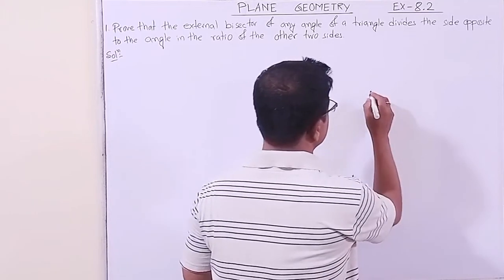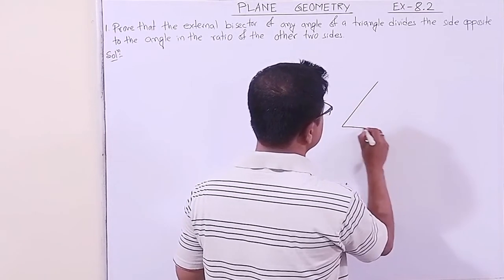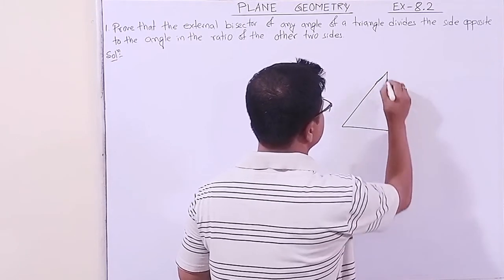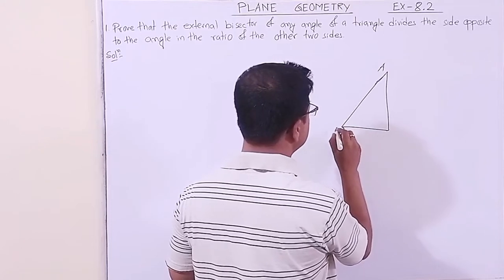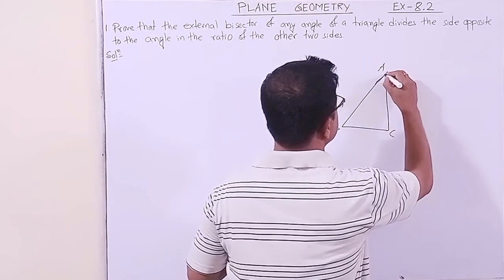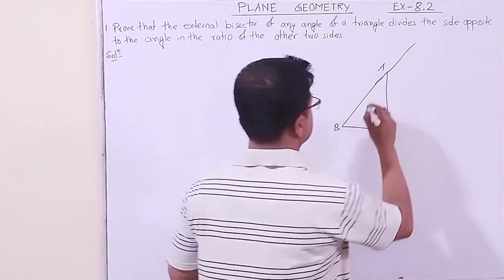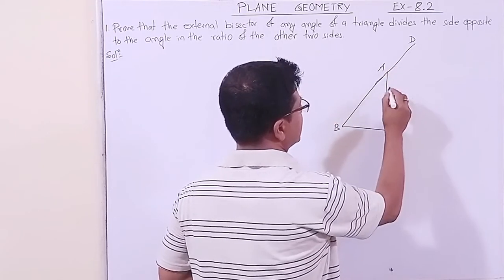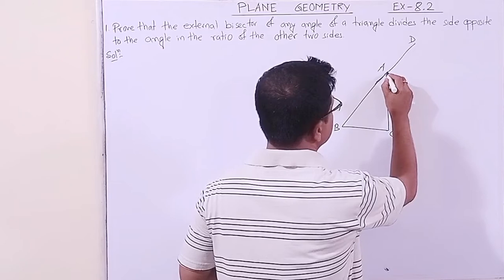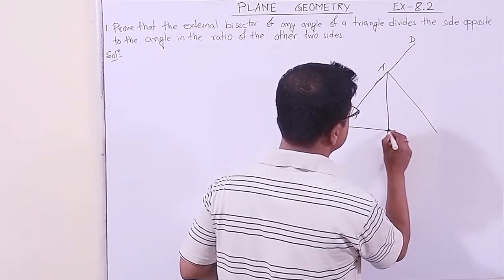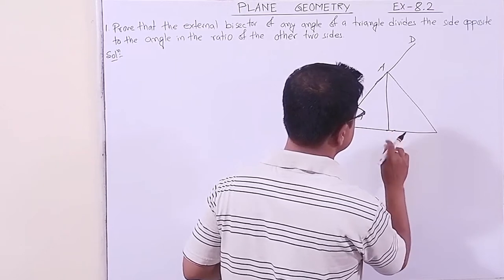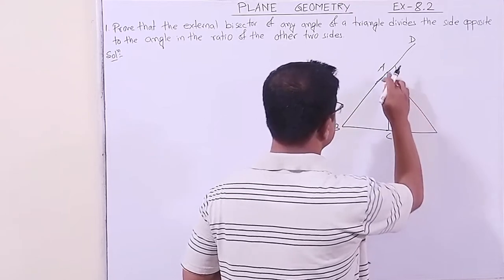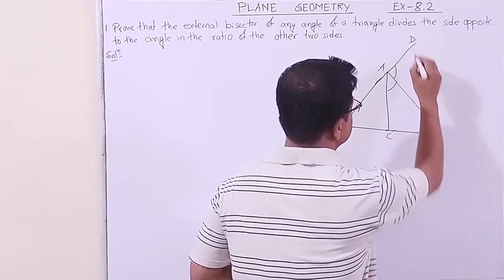Prove that the external bisector of any angle of a triangle divides the side opposite to the angle in the ratio of the other two sides. Draw an obtuse angle triangle ABC. Here, AE is the bisector of the external angle DAC, where D is on the extension of BA.